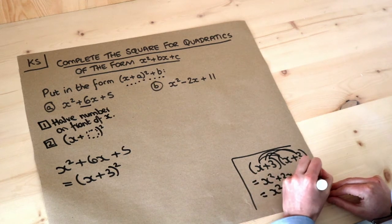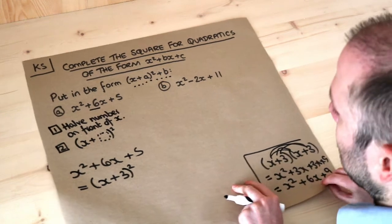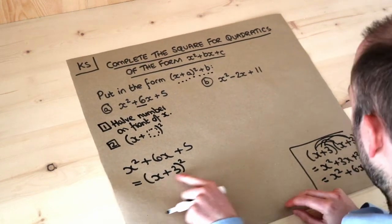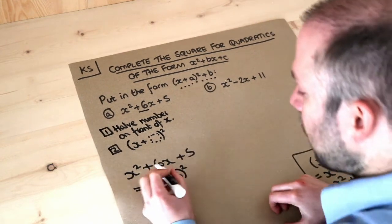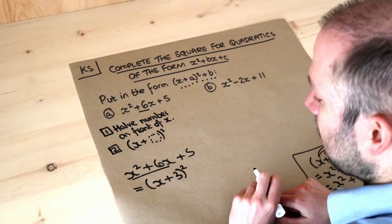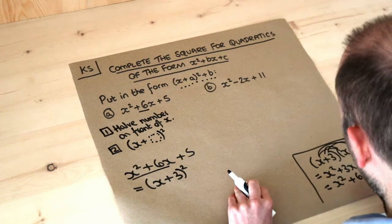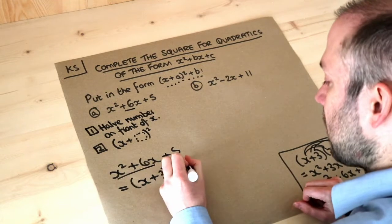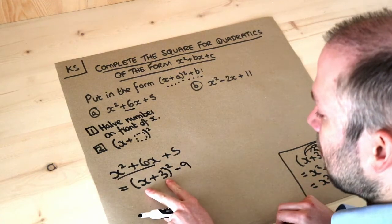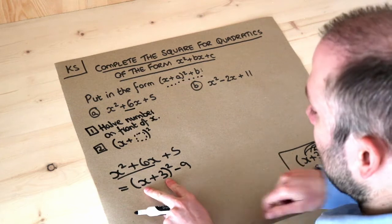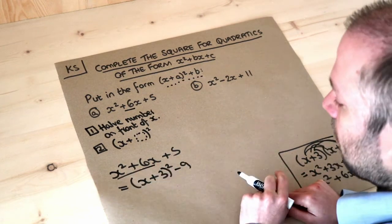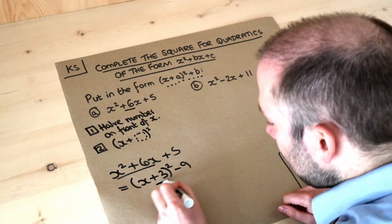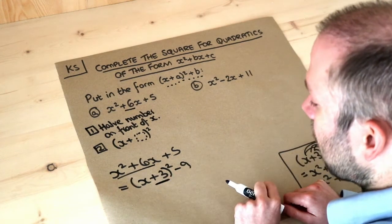I'm presuming you already know how to expand two brackets — if not, do look up that video. So x plus three squared gives us x squared plus 6x plus nine. But let's say we only wanted x squared plus 6x — we don't want that plus nine. So we just throw it away by subtracting the nine. Whatever this number is here, we square it and then subtract it.